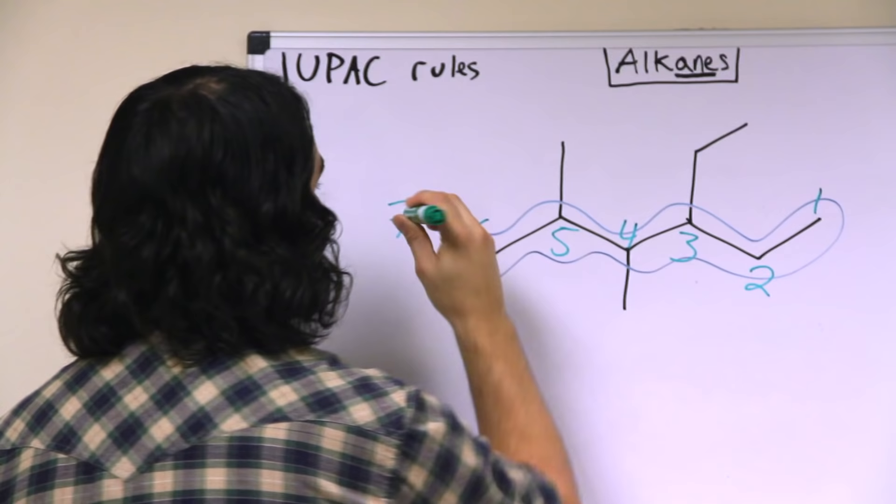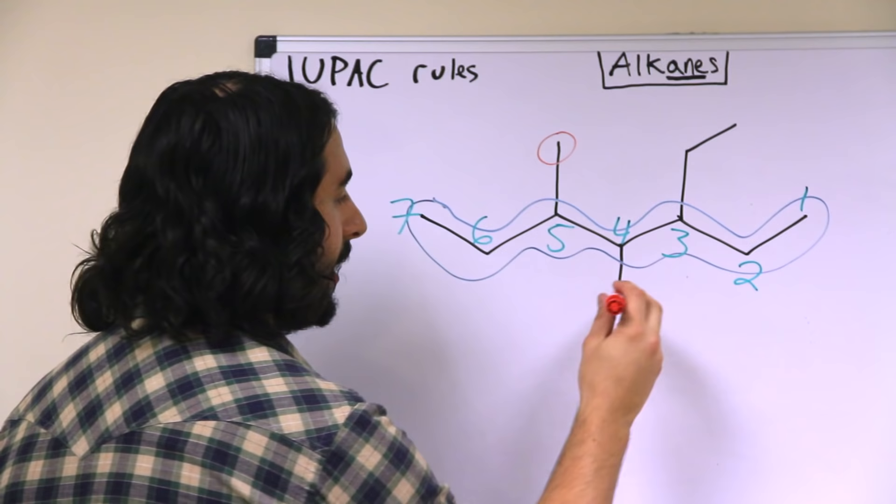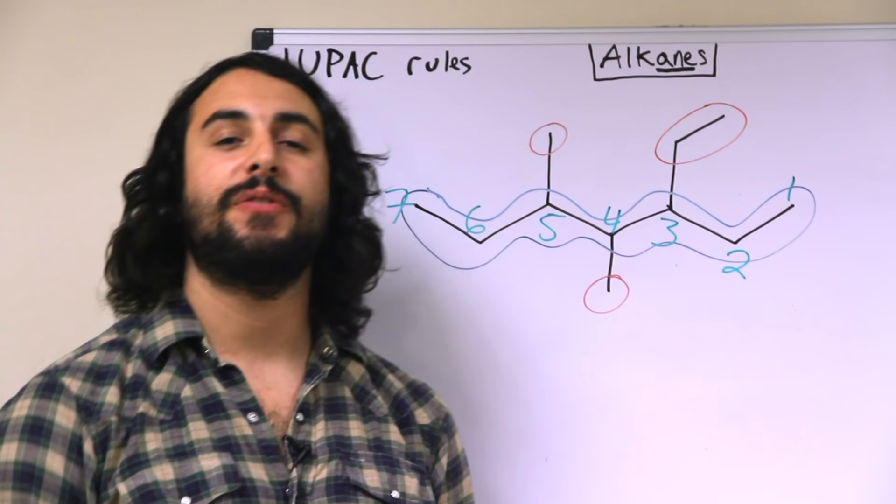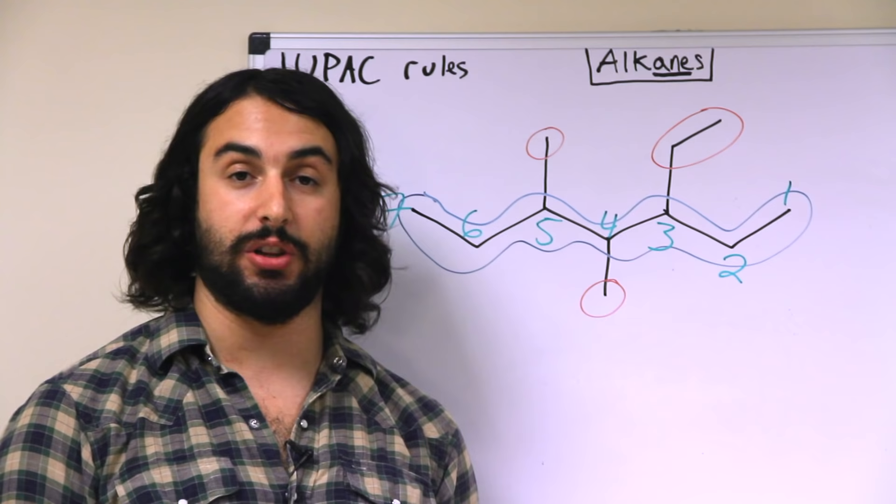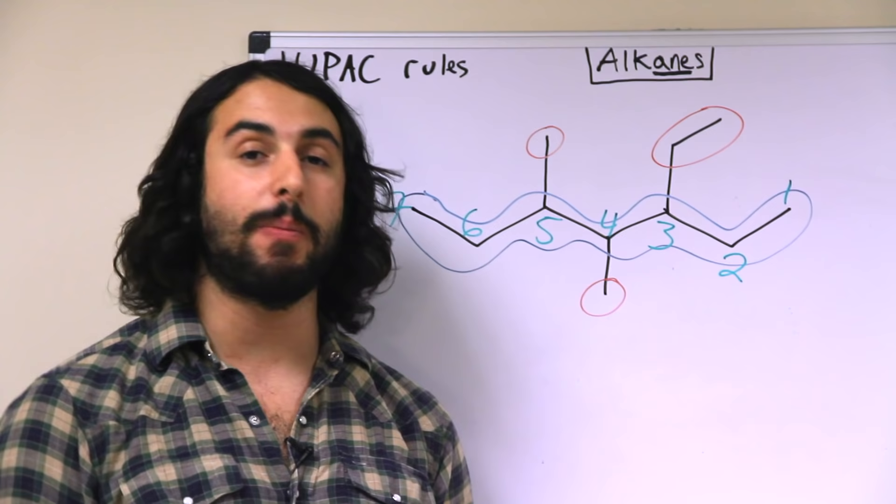Okay, so now we identify that we have a methyl group on carbon 5, a methyl group on carbon 4, and an ethyl group on carbon 3. Now if it is the case that we have multiple substituents of the same type on a given molecule, we're going to list them simultaneously with a prefix indicating how many of them there are.